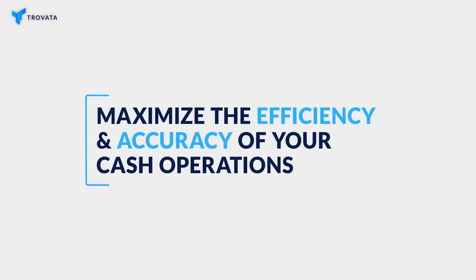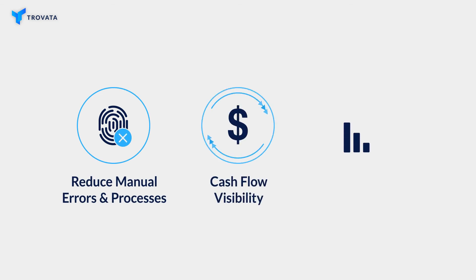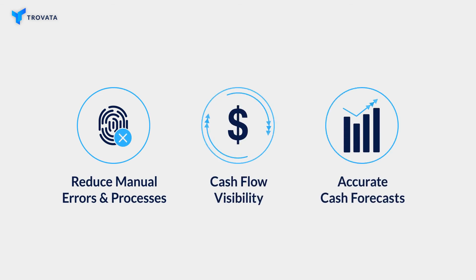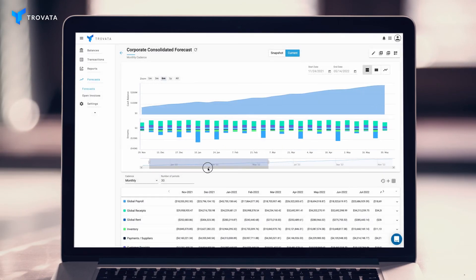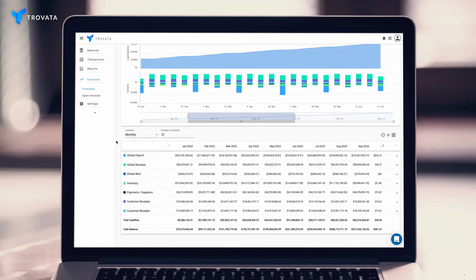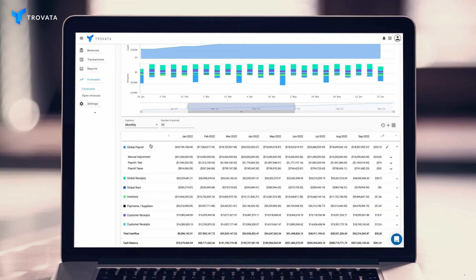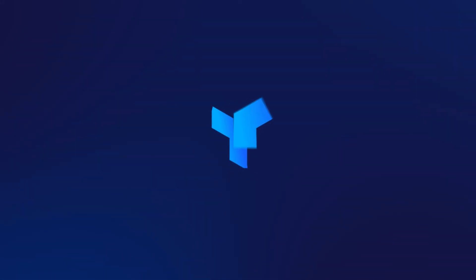API connections maximize the efficiency and accuracy of your cash operations. Rigid forecasts created with error-prone data stop you from finding valuable insights when you need them the most. Using Trovada's APIs, forecasts can be quickly generated with the richest, most up-to-date data that is always at your disposal to explore.